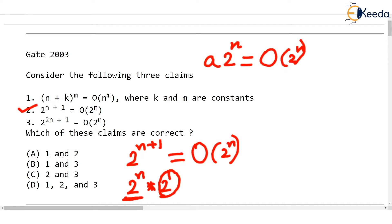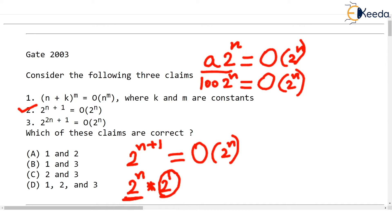Even if the left hand side were something like 100 × 2^n, as n grows larger and larger, 2^n will be very large compared to the constant multiple 100. So we write this as O(2^n), because the growth of the function is controlled by 2^n. In this case we have 2 × 2^n, which boils down to O(2^n). Claim 2 is obviously correct.